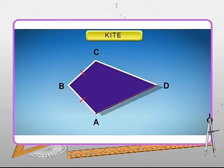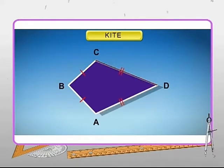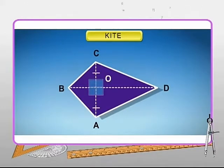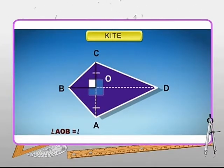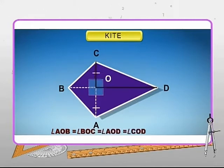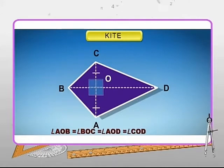The longer diagonal of a kite bisects the other diagonal at right angles. In the figure, longer diagonal BD bisects the other diagonal AC at right angles. Hence AO is equal to OC. Also, angle AOB is equal to angle BOC, which is equal to angle AOD, which is equal to angle COD, and each one is equal to 90 degrees.